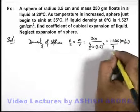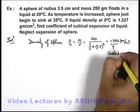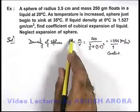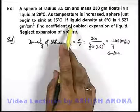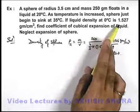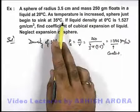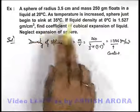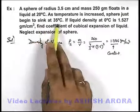And here it is given that this is a constant, as we are required to neglect the expansion of sphere. Now, the density of liquid at zero degree is 1.527, and at 35 degree centigrade the sphere just begins to sink. That means the density of sphere and density of liquid becomes equal.